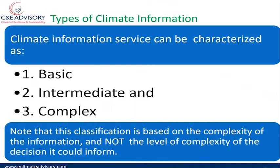When we talk about types of climate information service, we can characterize them into three: basic climate information, intermediate, and complex. This classification is based on the complexity of the information and not the level of complexity of the decision it could inform. So the information involved is complex, but the decision it informs may not be very complex.